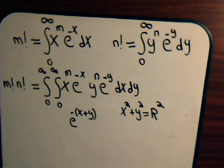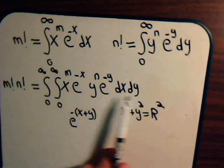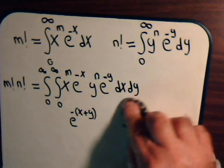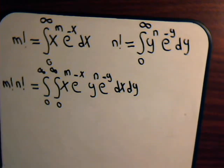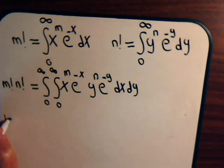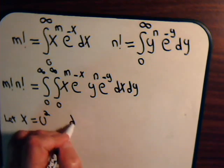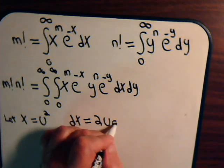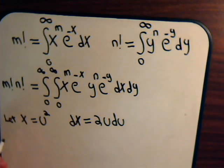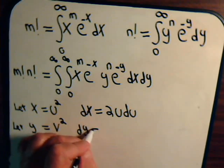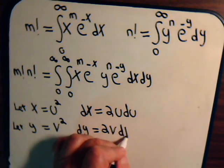If this were x squared plus y squared, we might convert to polar coordinates directly. Since we only have x plus y, let's try a substitution: let x equal u squared, so dx equals 2u du; and let y equal v squared, so dy equals 2v dv.